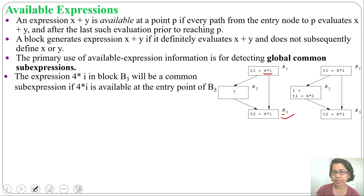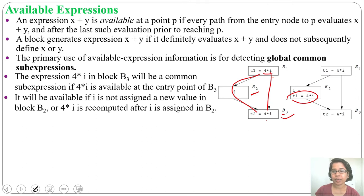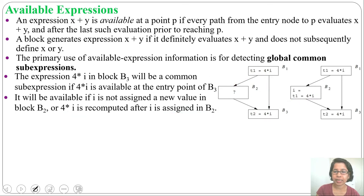There are two paths from block 1 to block 3: one is through block 2, and another is directly. So the value of i should not be reassigned, and 4 times i should not be re-computed in block 2. It will be available if i is not assigned a new value in block 2, or if 4 times i is re-computed after i is assigned in block 2. Only then will we say 4 times i is an available expression at block 3.